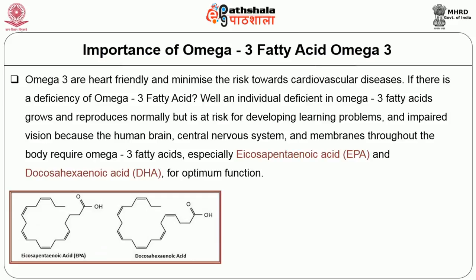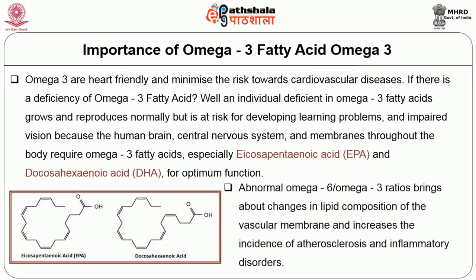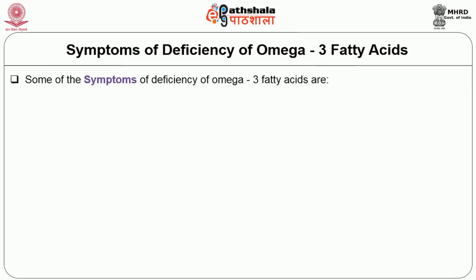An individual deficient in omega 3 fatty acids grows and reproduces normally but is at risk for developing learning problems and impaired vision, because the human brain, central nervous system, and membranes throughout the body require omega 3 fatty acids — especially EPA and DHA — for optimum function. Abnormal omega 6 to omega 3 ratios bring about changes in lipid composition of the vascular membrane and increase the incidence of atherosclerosis and inflammatory disorders. Symptoms of omega 3 deficiency include mental effects.